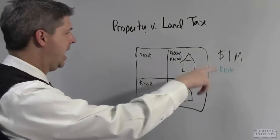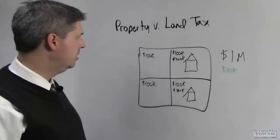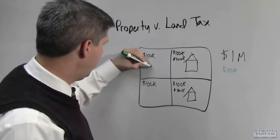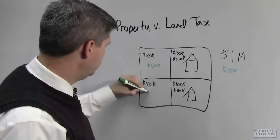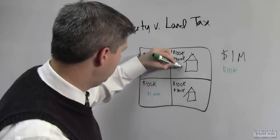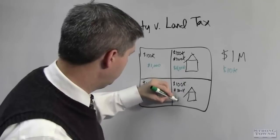So your portion of that is going to be your percentage of a million. So $100,000 is 10%. These people would pay $1,000 in taxes. These people would pay $1,000 in taxes. This place would pay $4,000 and this place would pay $4,000.